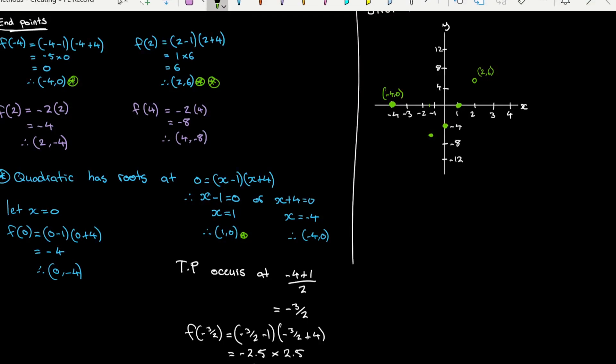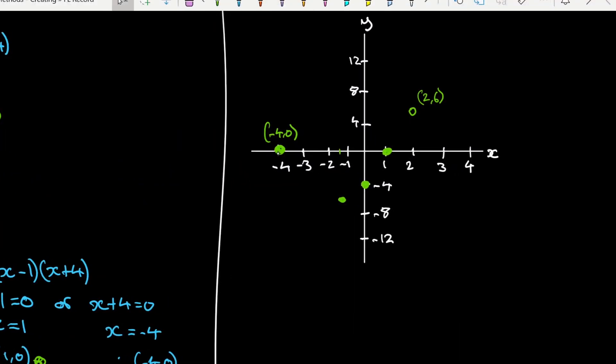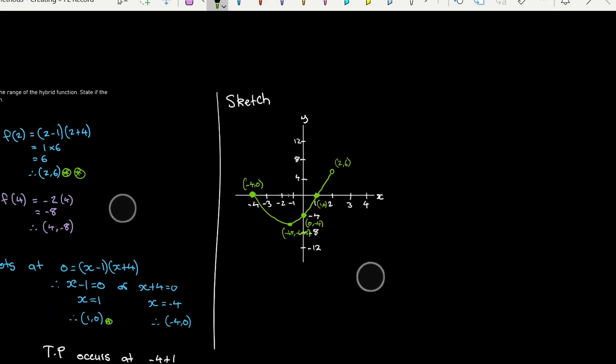And so my quadratic, if I just focus on it here, it's going to look like this. This is my first part of the hybrid function there. And it's going to go up to that point there, and I've got an open circle just to indicate that it's not inclusive. This one, that's the point when x is 1, y is 0. This is the point when x is negative 1.5, y is negative 6.25. And then this one is when x is 0, y is negative 4. So that's my quadratic component.